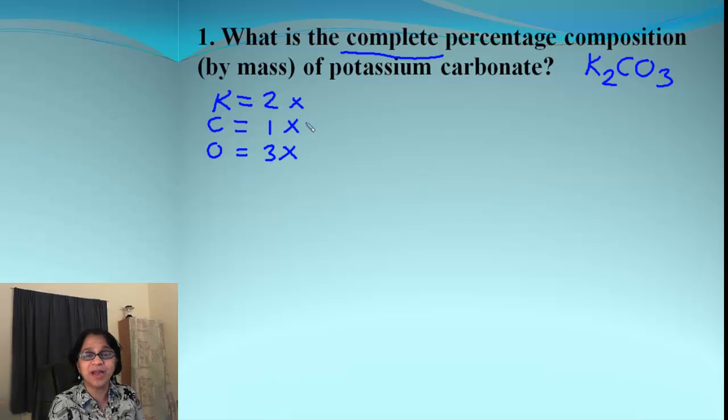And simply you are going to find out the total mass due to element by multiplying the number of atoms by the atomic mass. And how do you get the atomic mass? From of course the periodic table. So potassium, I got 39.10. Carbon is 12.01. And for oxygen, when we round up, it's 16.00.